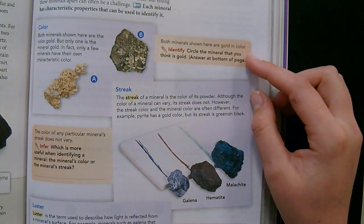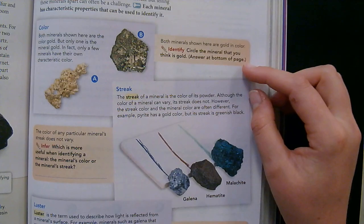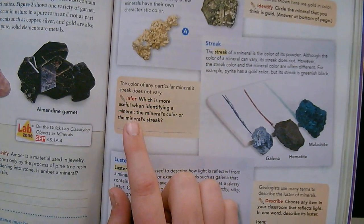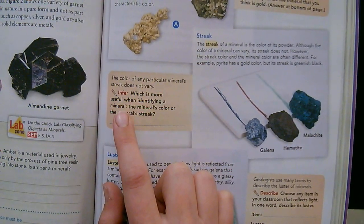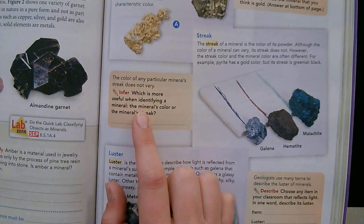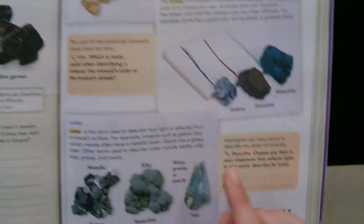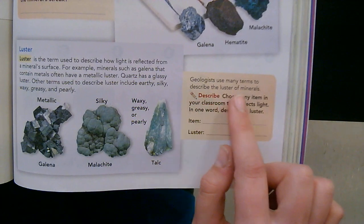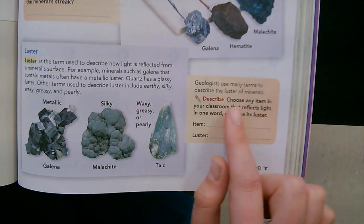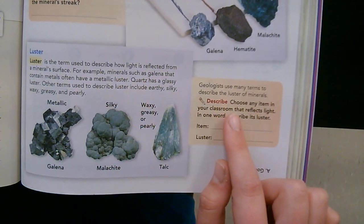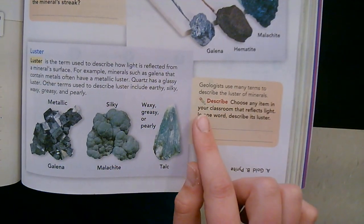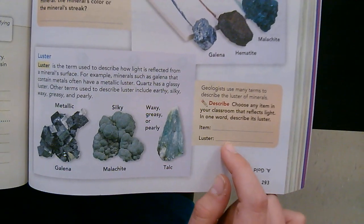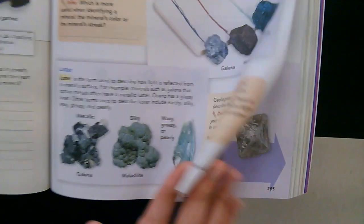Both minerals shown here are gold in color. Identify: circle the mineral that you think is gold. Infer: which is more useful when identifying a mineral — the mineral's color or the mineral's streak? Geologists use many terms to describe the luster of minerals. Choose any item in your classroom that reflects light and in one word describe its luster. List the item and the luster words you would use.